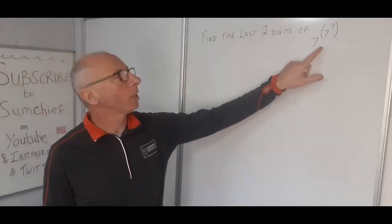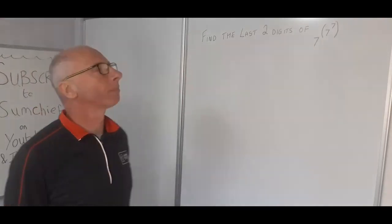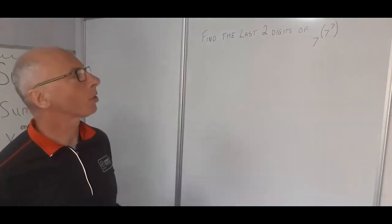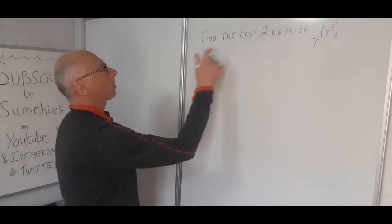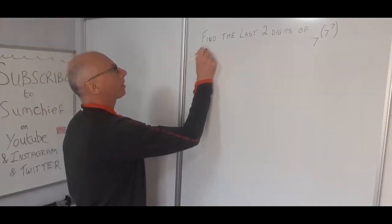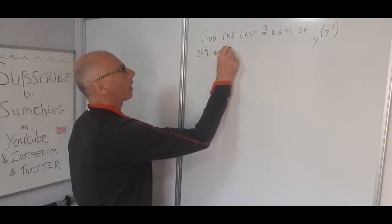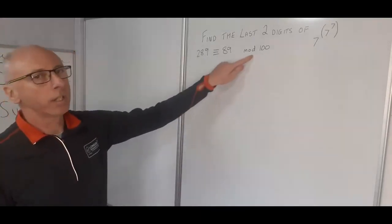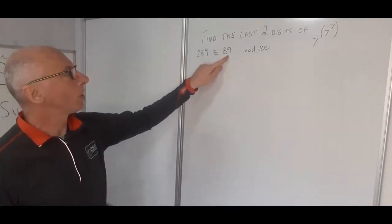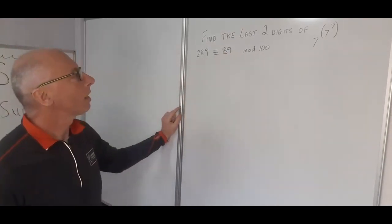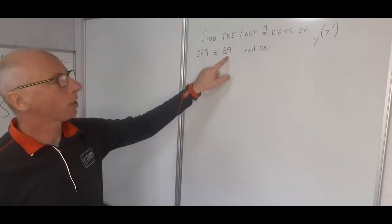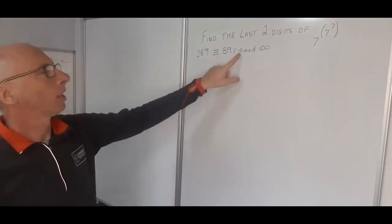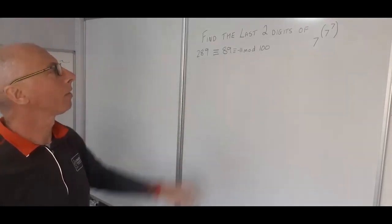Find the last two digits of 7 to the power of 7 to the power of 7. To find the last two digits, we're looking for a congruence. For example, 289 is congruent to 89 modulo 100. So working in this modulus gives us the last two digits — the result must be between 0 and 99, since it's also congruent to minus 11 mod 100, and we want the positive value.